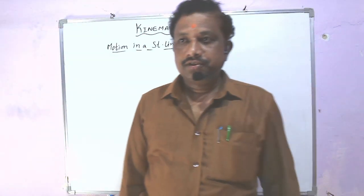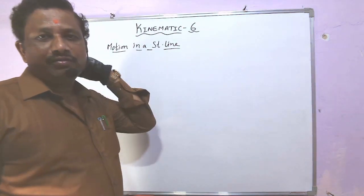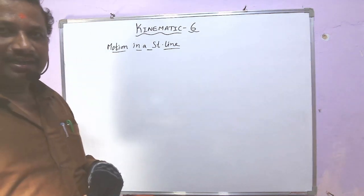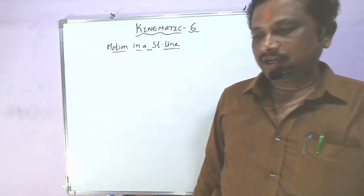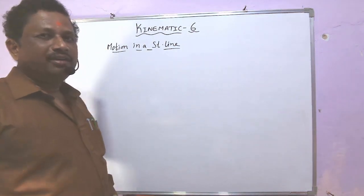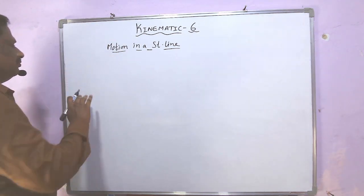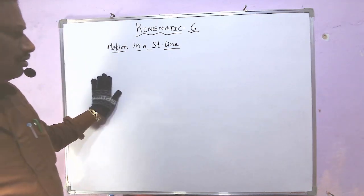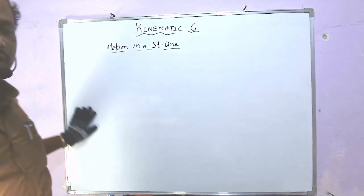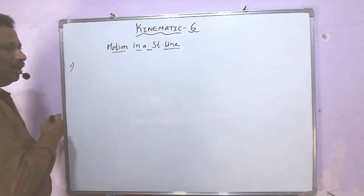Hello students, how are you today? This is the continuation class of Kinematics Part 6: Motion in a Straight Line. In the last previous classes we learned displacement, distance, speed, velocity, and acceleration. Today we will learn a few more things and also add the kinematic equations — the equations of motion.